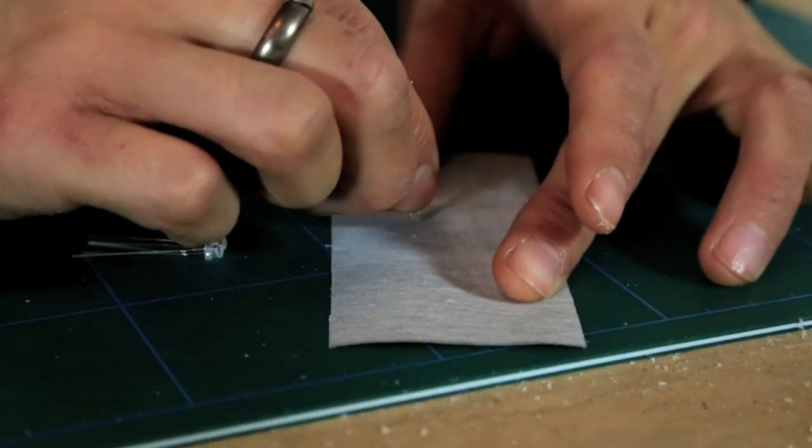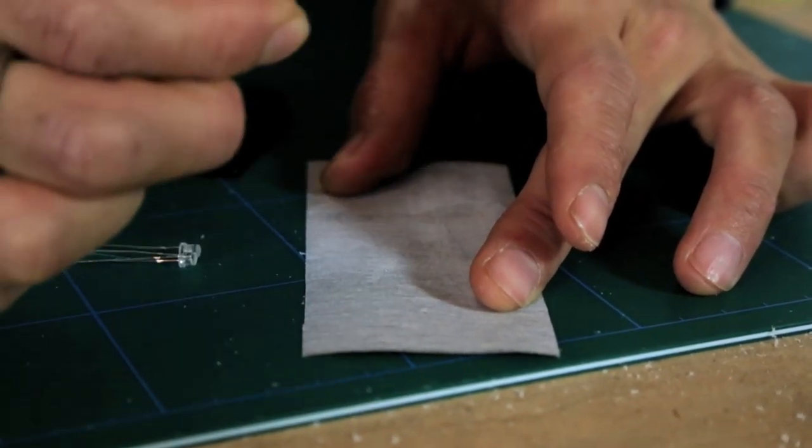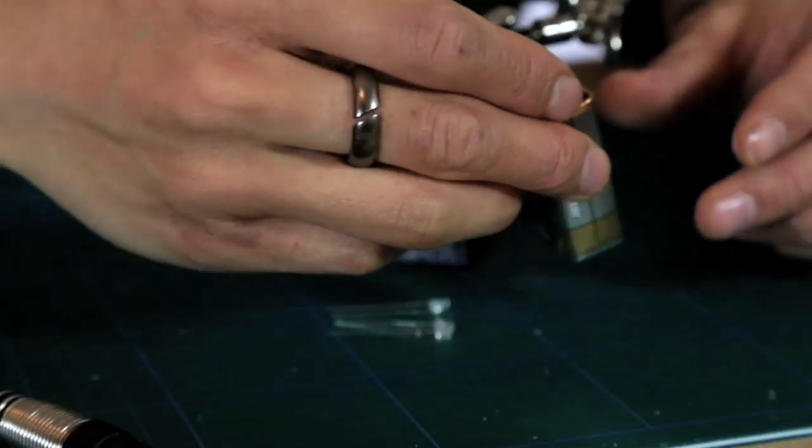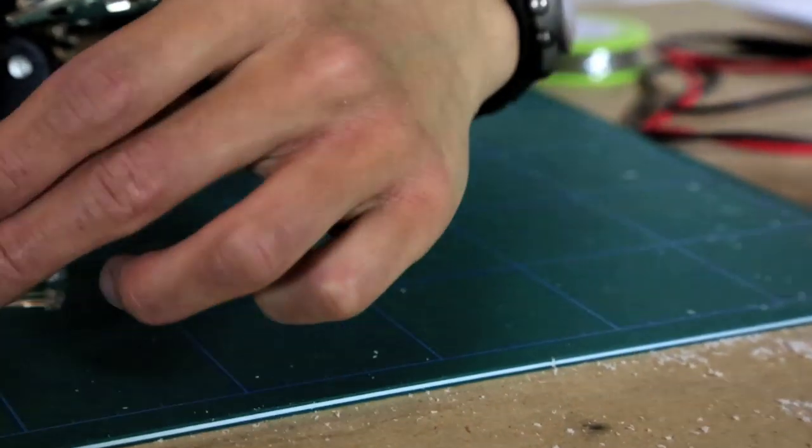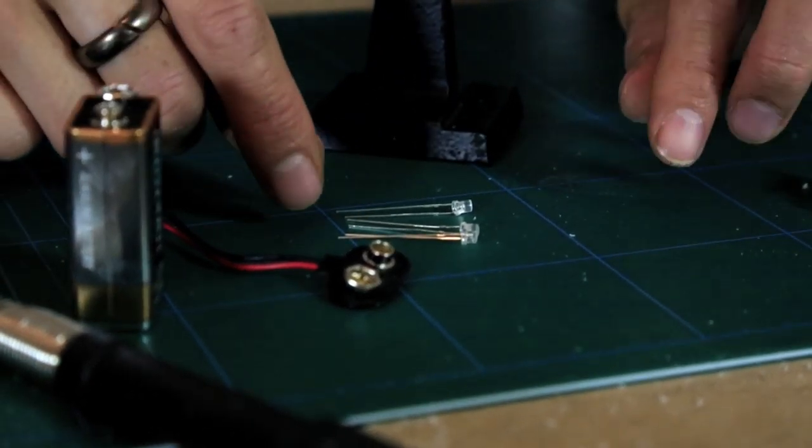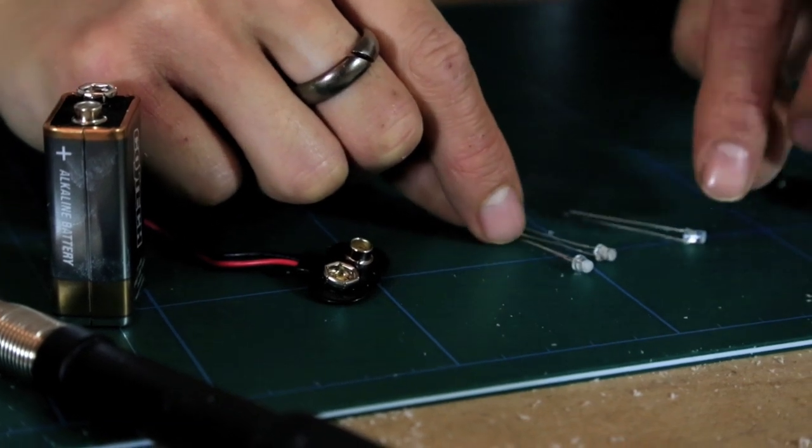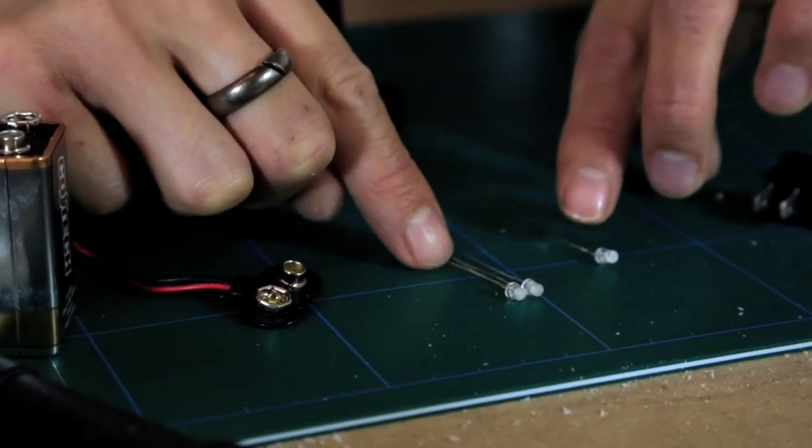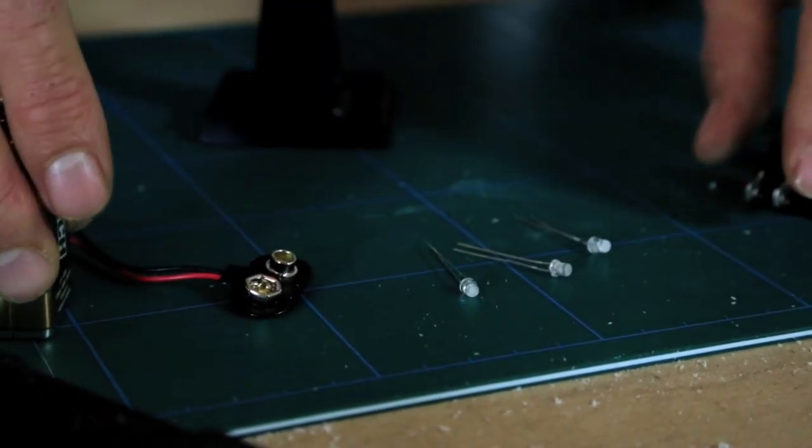With a bit of 220 grit sandpaper, just sand down the end to help diffuse the light. And then we'll need the nine-volt battery, the nine-volt battery clip and a switch. And we're going to wire the three LEDs in series. So positive leg to negative, positive to negative, and then to the battery.